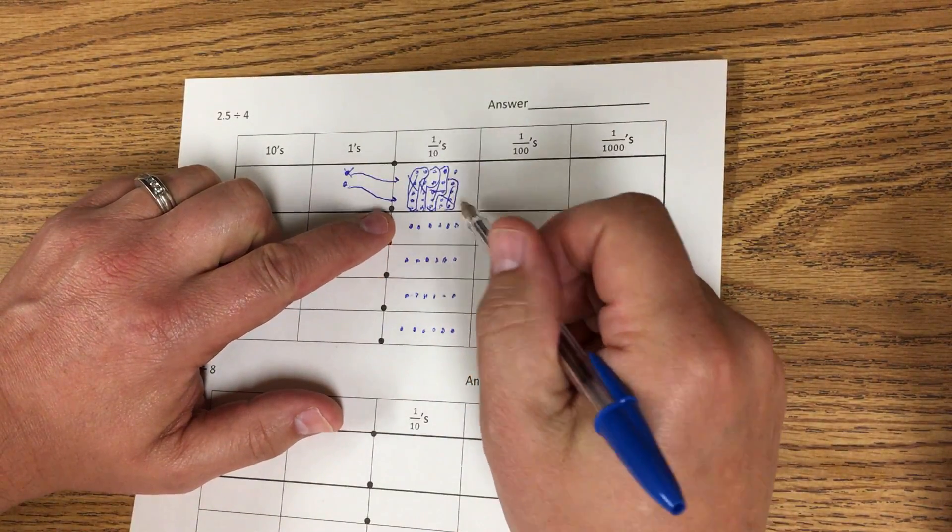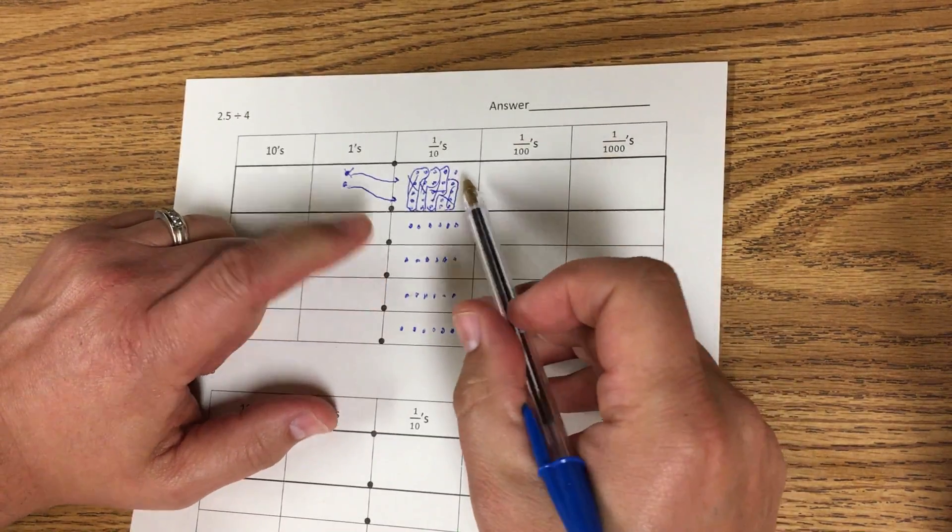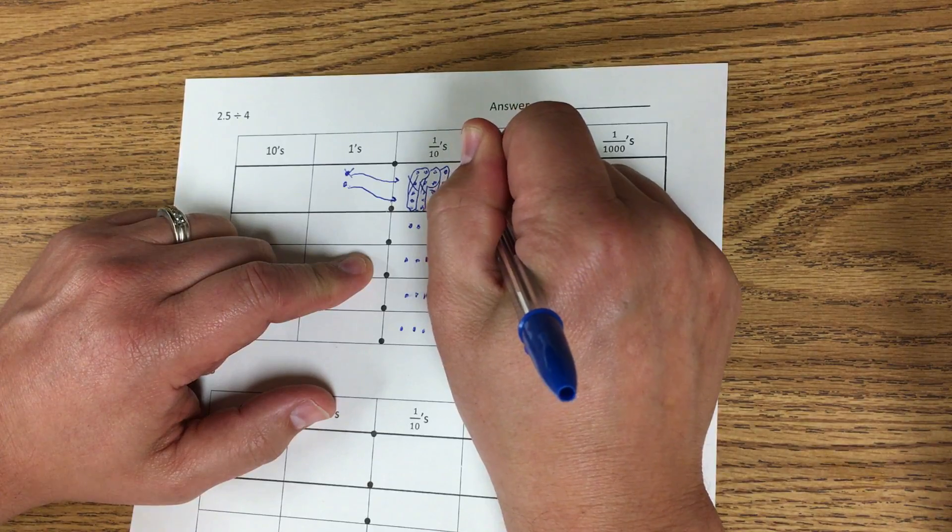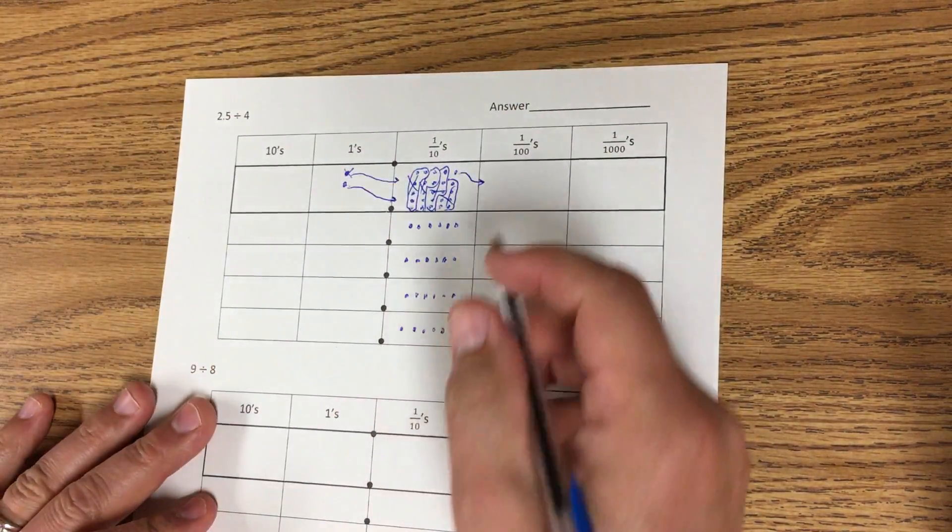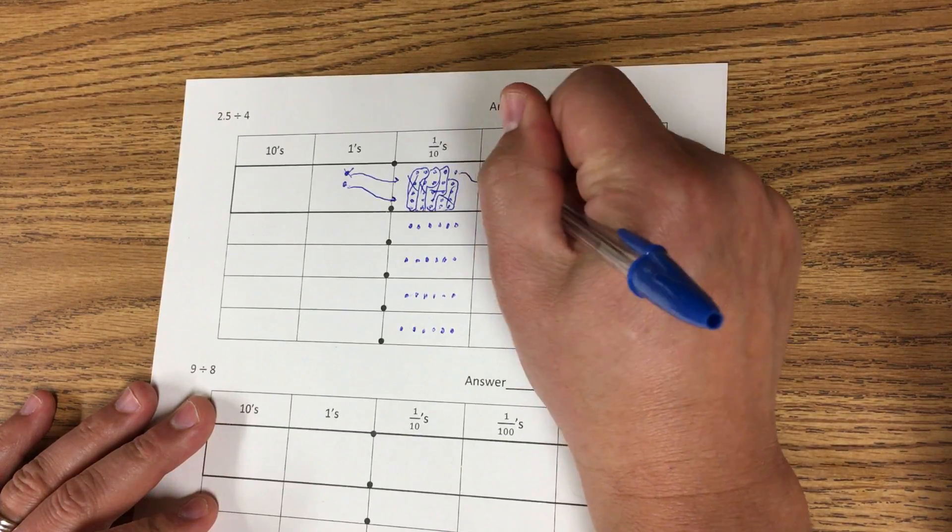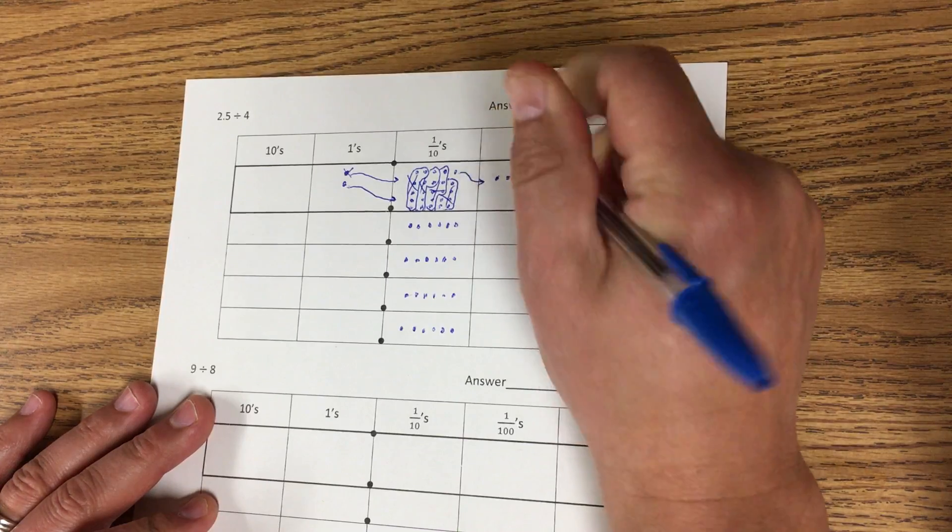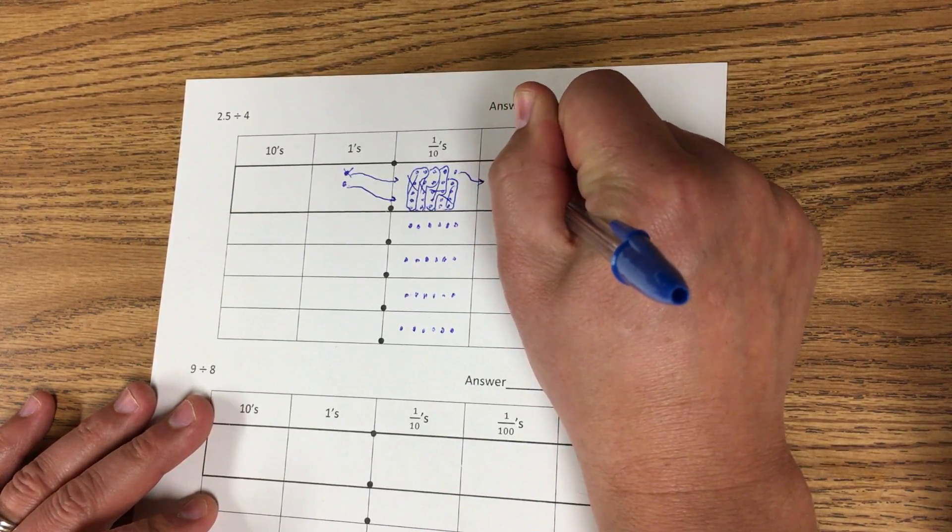Alright, now that's as many as I could spread out evenly. And there is 1 left. So when we have 1 left, we're gonna go ahead and make 10 hundredths out of 1 tenth. So I'm gonna change that into 10 hundredths. 1, 2, 3, 4, 5, 6, 7, 8, 9, 10.